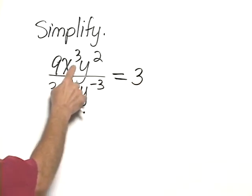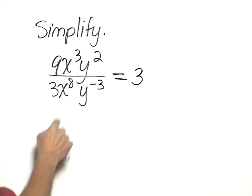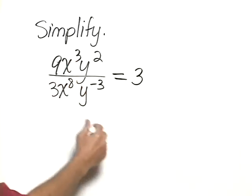Then when we divide x cubed by x to the 8th, we subtract the powers. So we have x to the 3 minus 8.